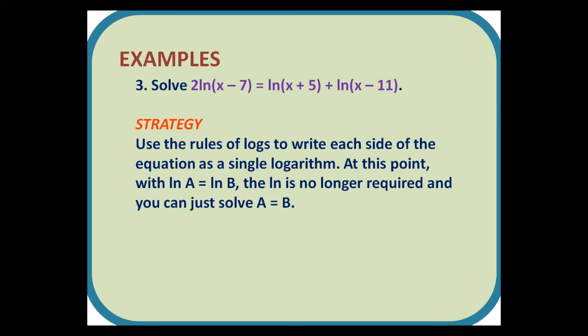Question 3: Solve 2ln(x - 7) = ln(x + 5) + ln(x - 11). Strategy: Use the rules of logs to write each side of the equation as a single logarithm. At this point, with ln A = ln B, the ln is no longer required, and you can just solve A = B.